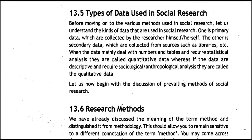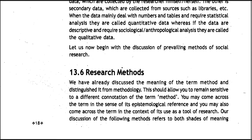13.5 Types of Data Used in Social Research. Before moving on to the various methods used in social research, let us understand the kinds of data we use. One is primary data, which are collected by the researcher themselves. The other is secondary data, which are collected from sources such as libraries. Data that mainly deals with numbers and tables and requires statistical analysis is called quantitative data, whereas data that is descriptive and requires sociological or anthropological analysis is called qualitative data.